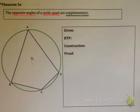First, let's remind ourselves what a cyclic quad is. A cyclic quad is a quadrilateral — a four-sided figure — where each of the vertices or corners of the quadrilateral are on the circumference of a circle. The opposite angles of a cyclic quad are supplementary, meaning they add to 180 degrees. So if you're given a cyclic quad, you know the opposite angles add to 180.